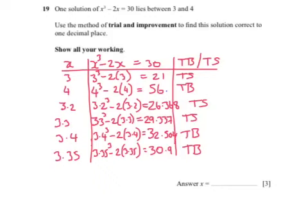And then it is literally a matter of trial and improvement. I have used 3.2 because the answer for 3 was 21 and it was only 9 away from the answer we wanted of 30. So I felt that it was quite a low value we should be looking for. So trying 3.2, it gave us 26.368, which was too small. 3.3 was slightly too small, although very close to 30.